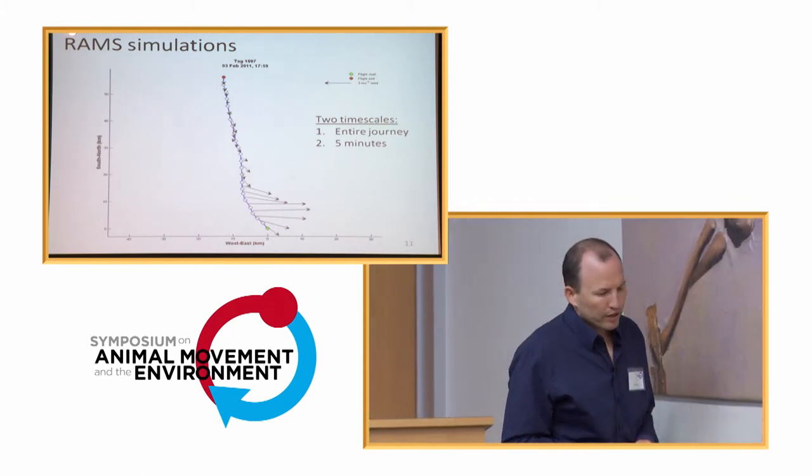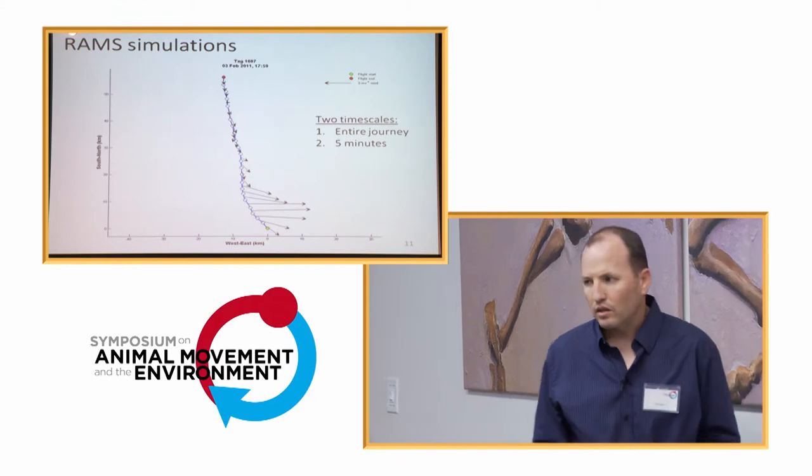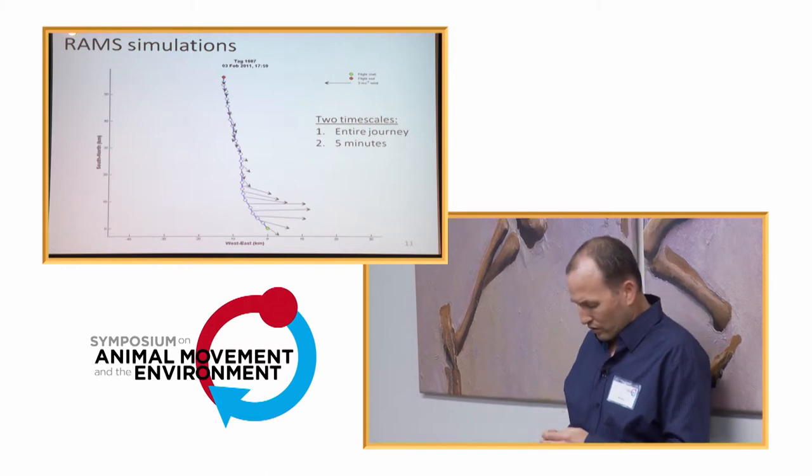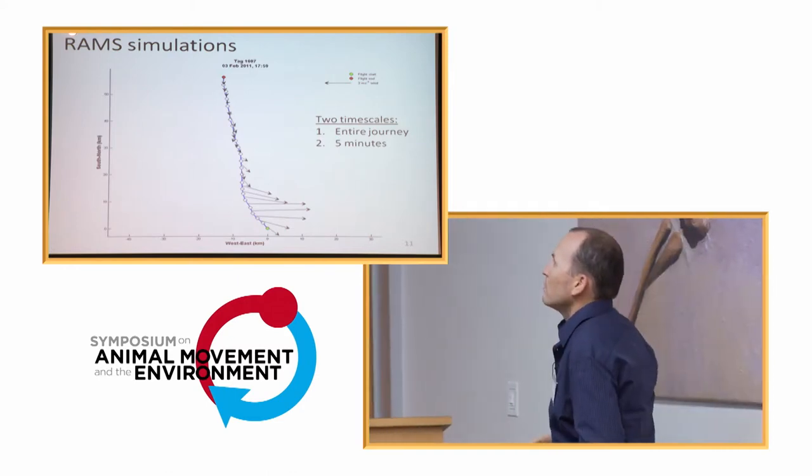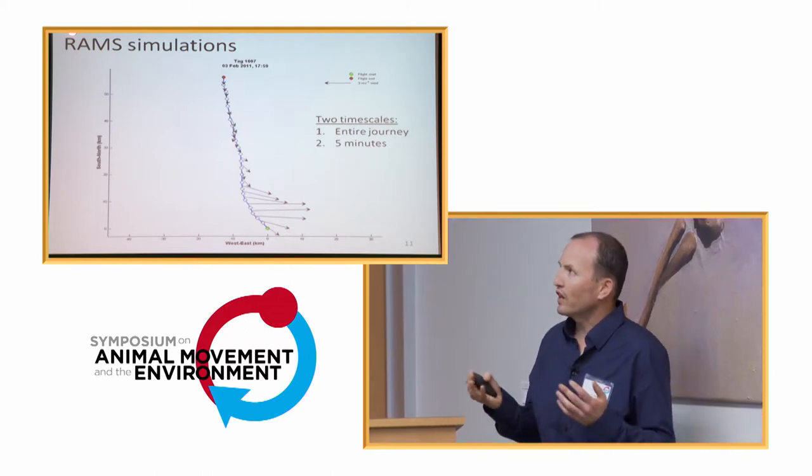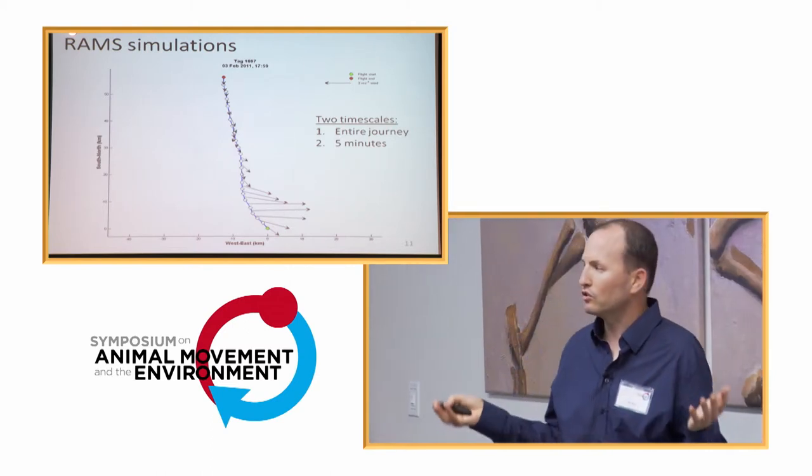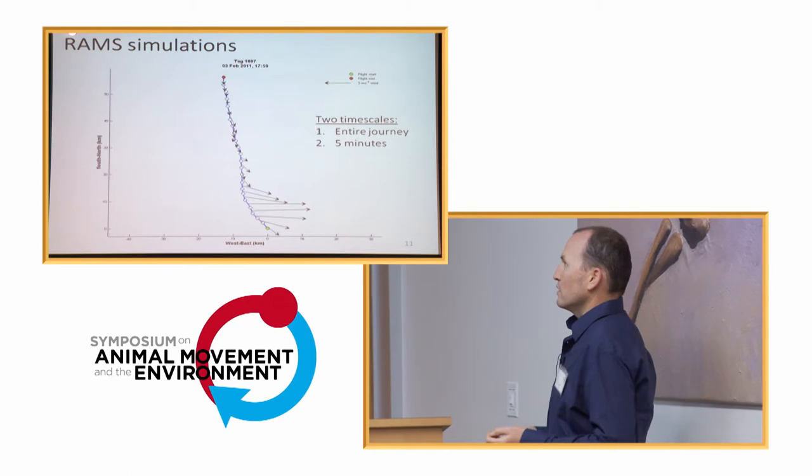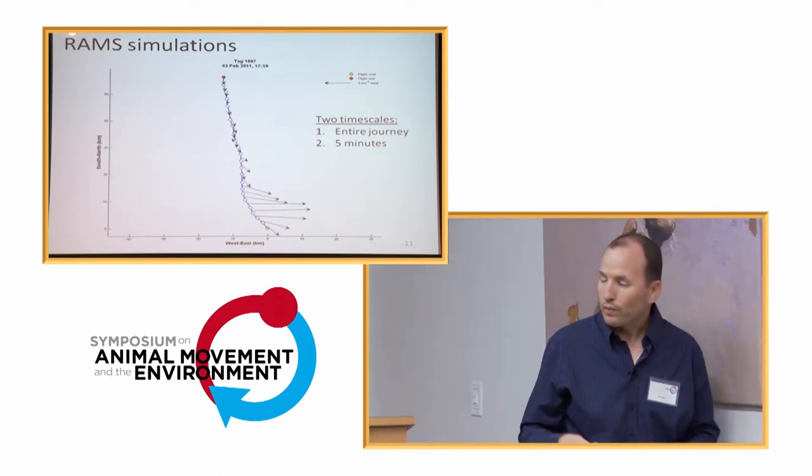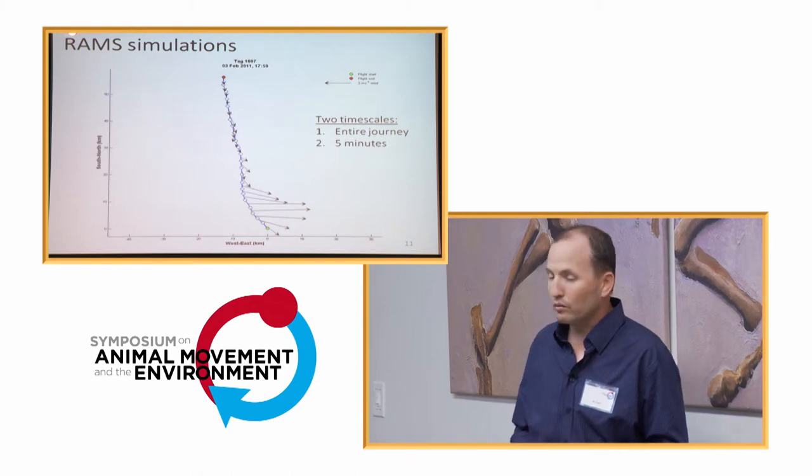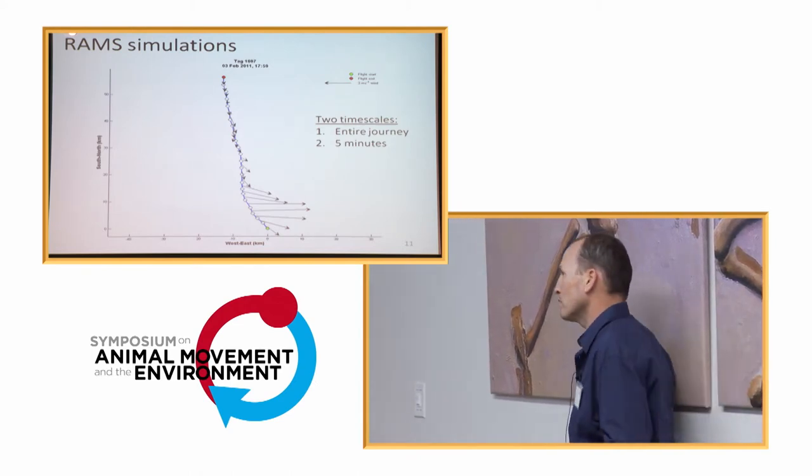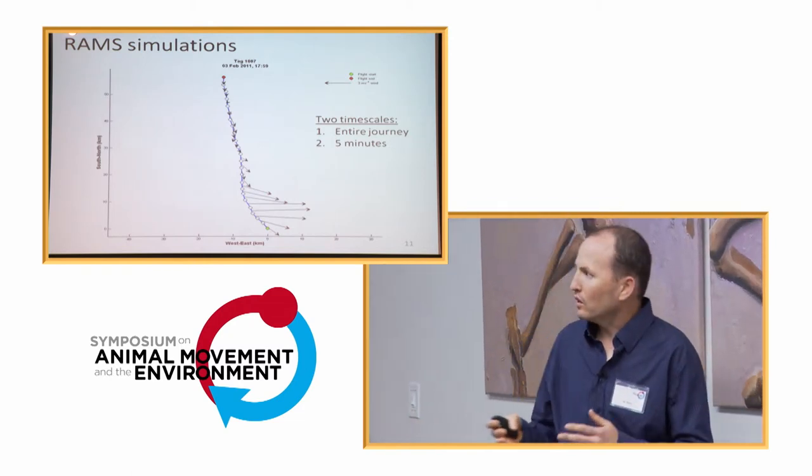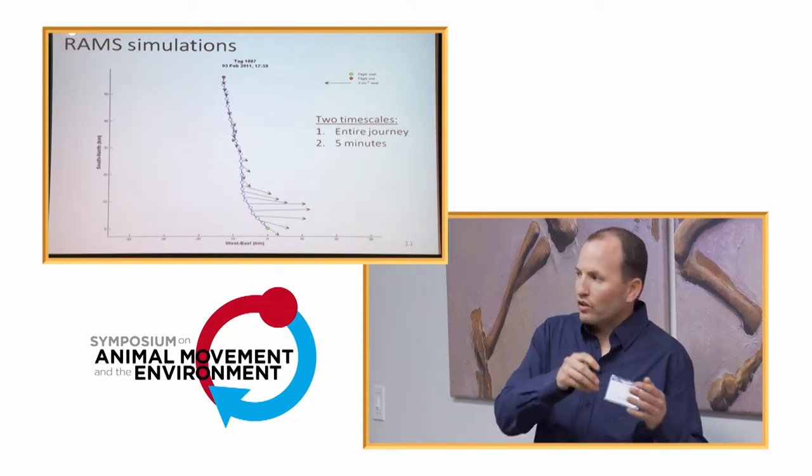So, we ran some simulation of atmospheric data, wind data, in order to track the motion of the atmosphere throughout the journey. So, we divided it to two different scales. One is the scale of the journey, which lasted for an hour or two. And the second are the actual rate of GPS acquisition. So, it was five minutes in most cases. In two tags, we had two and a half minutes. And we modeled the data, the atmospheric data. We matched it spatially and temporally to the actual track of the bat.